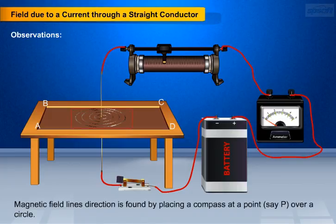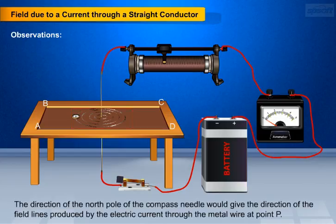Secondly, we observe magnetic field lines direction is found by placing a compass at a point P over a circle. The direction of the north pole of the compass needle would give the direction of the field lines produced by electric current through the metal wire at point P.